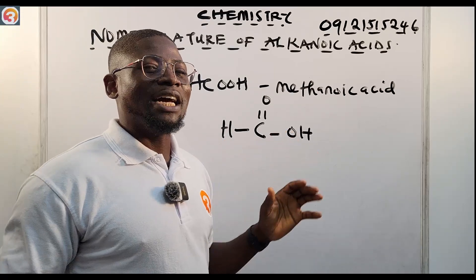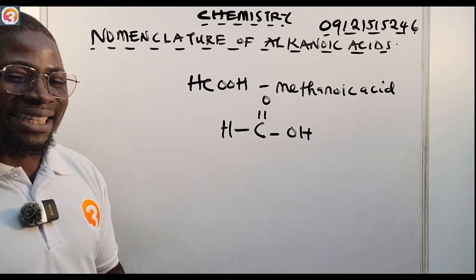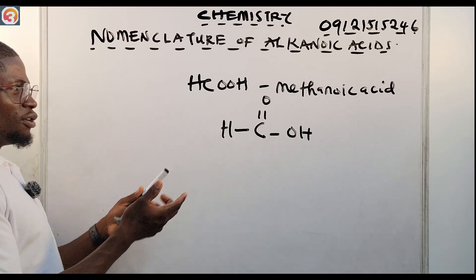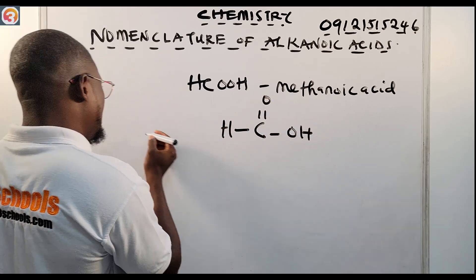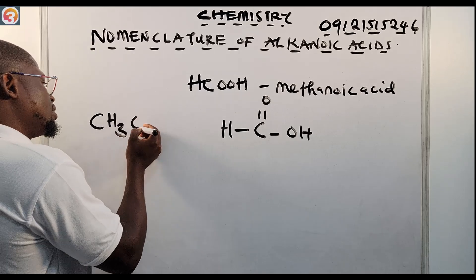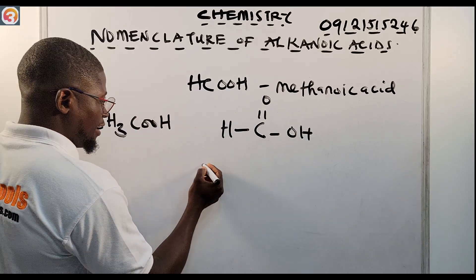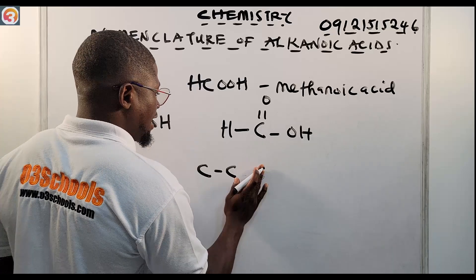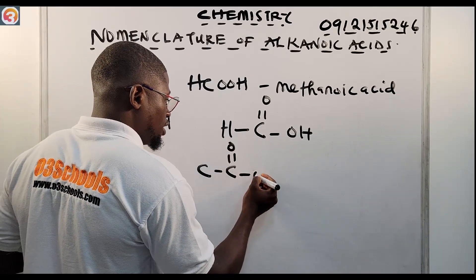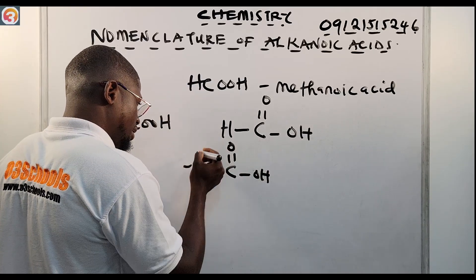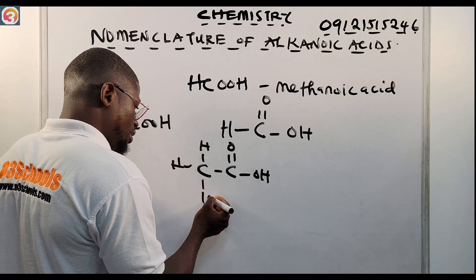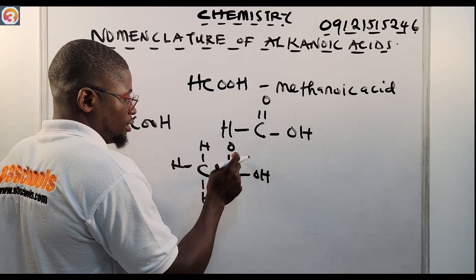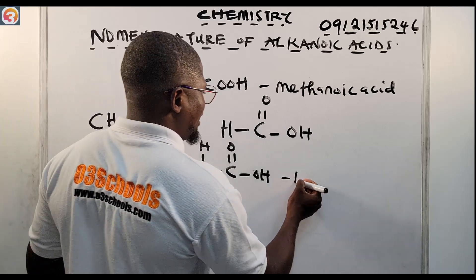If you metamorphose to the second member, that is ethanoic acid — CH₃COOH. You have your CH₃, then C double bonded to O, then your OH, with H, H, H. The bonds are complete: one, two, three, four. So these are our ethanoic acid.